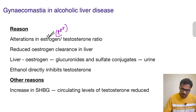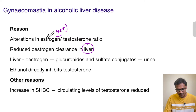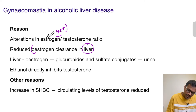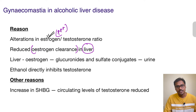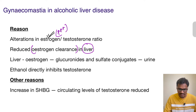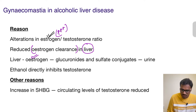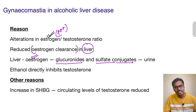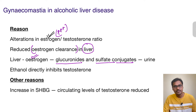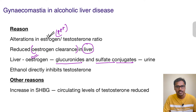In alcoholic liver disease, the liver, which is the primary organ for the metabolism of estrogen, is mainly responsible for estrogen clearance. Since the liver is affected, there is reduced estrogen clearance. Usually the liver converts estrogen to glucuronides and sulfate conjugates, which are eliminated in the urine. But since the liver is not functioning properly, these conjugates cannot be formed, so their elimination in urine is reduced.